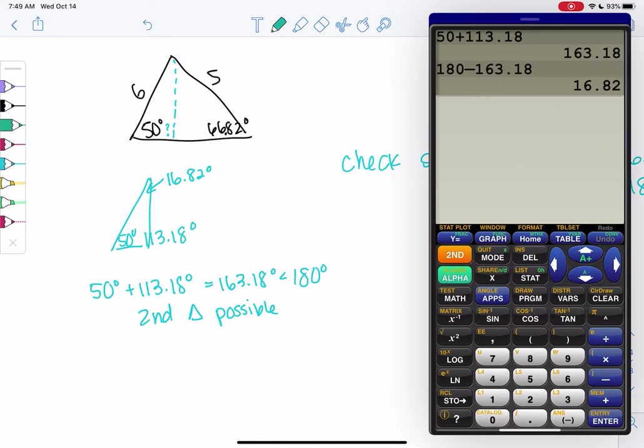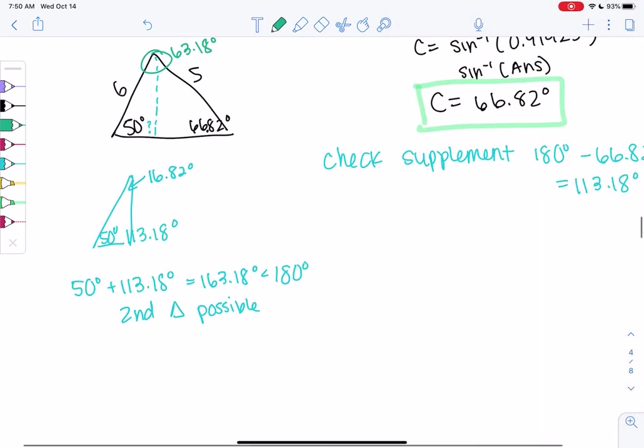Let's find the third angle in this triangle while I have the calculator out. 180 minus 50 minus 66.82. 63.18 degrees. And then we can use the law of sines to finish solving these.